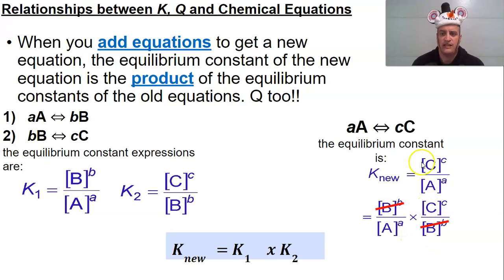And gives us what we would normally think of as our product over reactant. So the values would be multiplied together to produce a new K value.